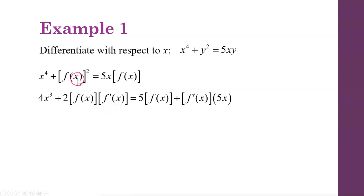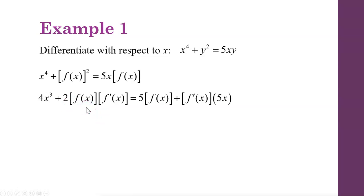So we get: 4x cubed — that's the derivative of x to the fourth — plus 2f(x) times f prime of x, which is the derivative of f(x) squared by the chain rule, multiplying by the derivative of the inside. On the other side, applying the product rule: derivative of 5x is 5, multiplied by f(x), plus derivative of f(x), which is f prime of x, multiplied by 5x. Substituting back, we have 4x cubed plus 2y y prime equals 5y plus 5x times y prime.